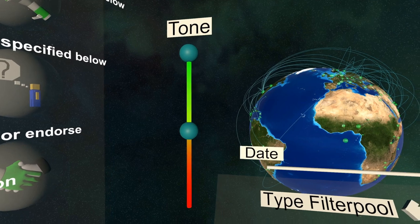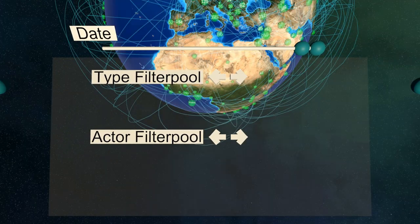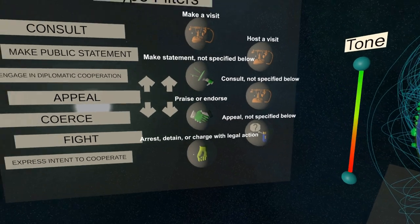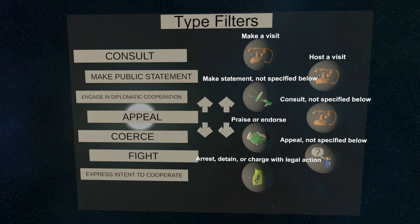Below the date axis is the filter pool. It contains a list of all event types and actors you are currently filtering by. To the left you'll find a list of event types you can filter by. It is sorted by the number of times the event type occurs in the events currently presented on the globe.